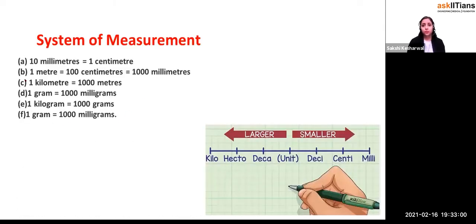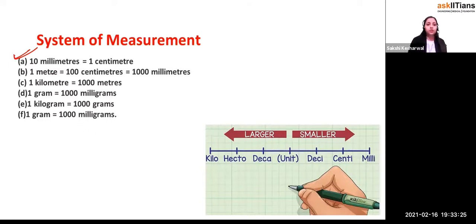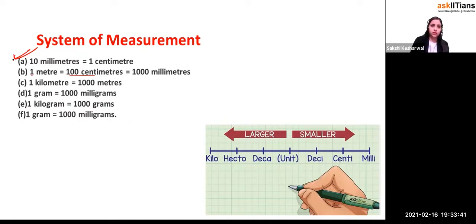Now, system of measurements. 10 millimeters equals 1 centimeter. Starting from milli: multiply by 10 to get centimeter, multiply by 10 again to get decimeter, then again to get meter. So 1 meter equals 100 centimeters, and 100 centimeters equals 1,000 millimeters. 1 kilometer equals 1,000 meters. 1 gram equals 1,000 milligrams. 1 kilogram equals 1,000 grams. These are the conversion systems.